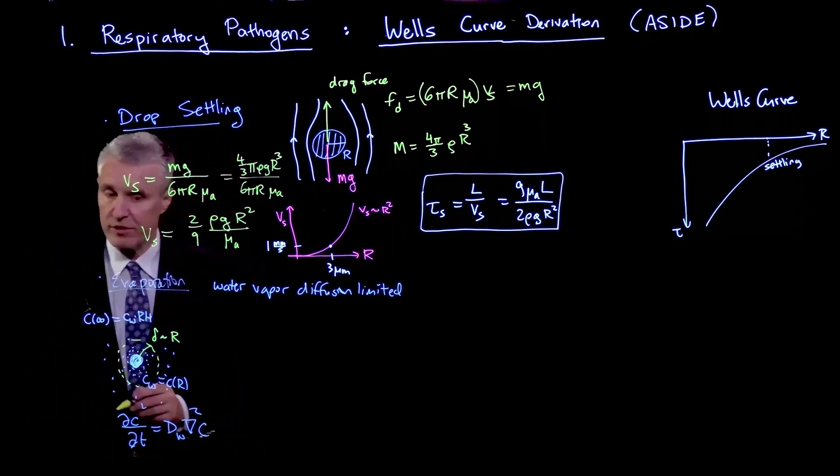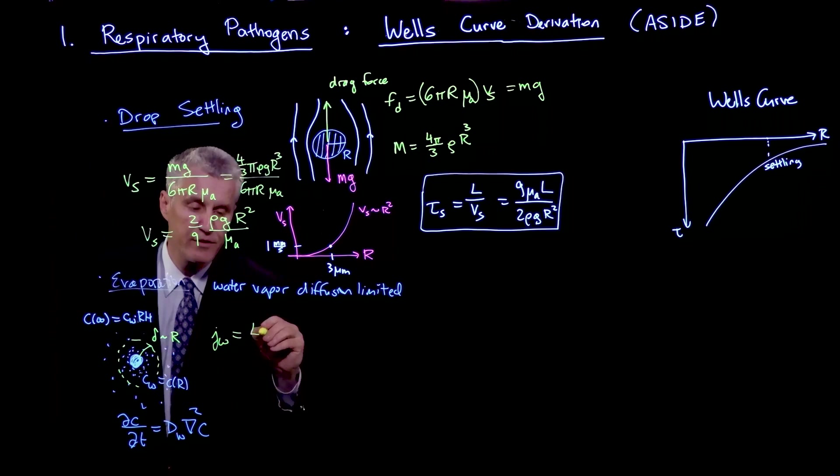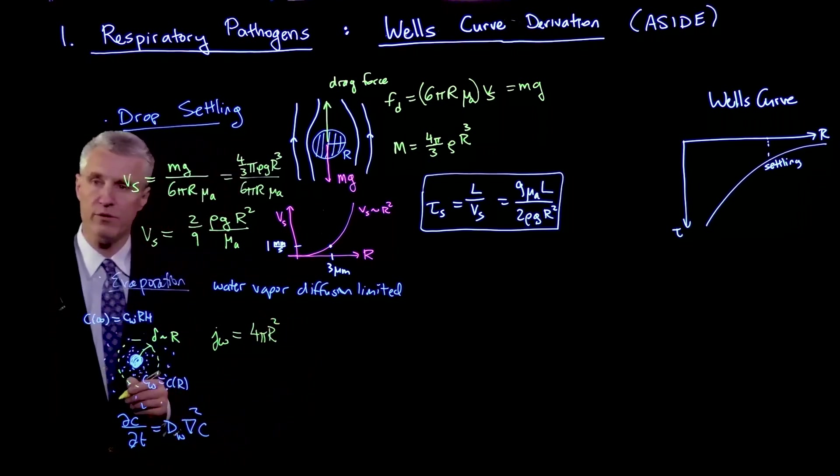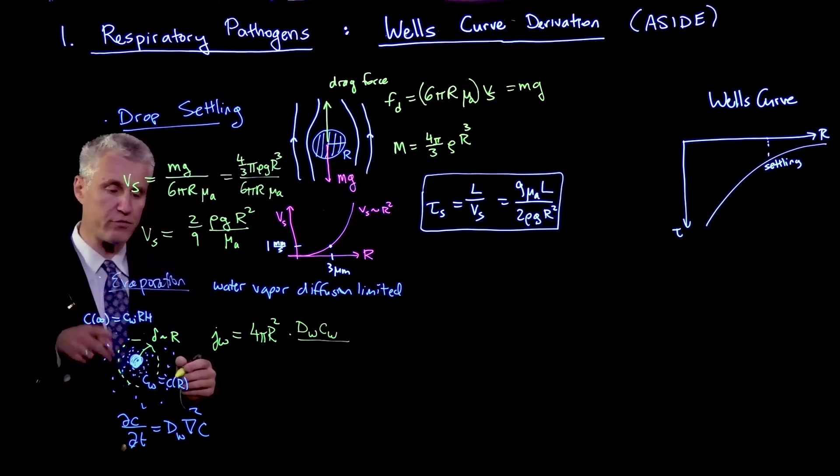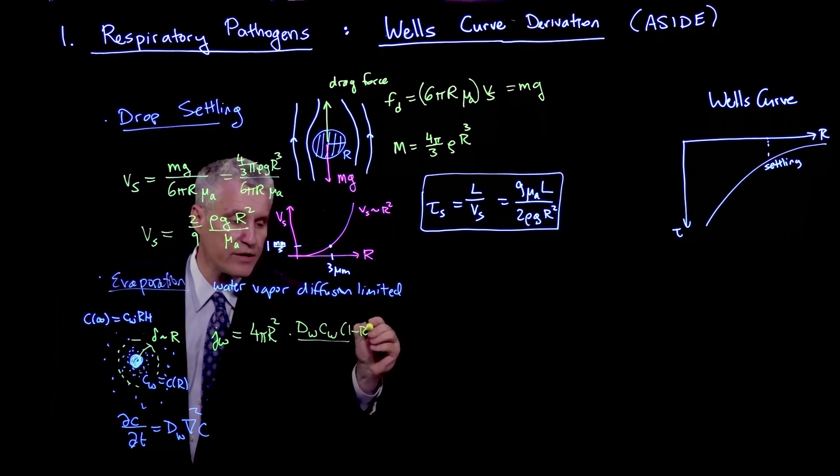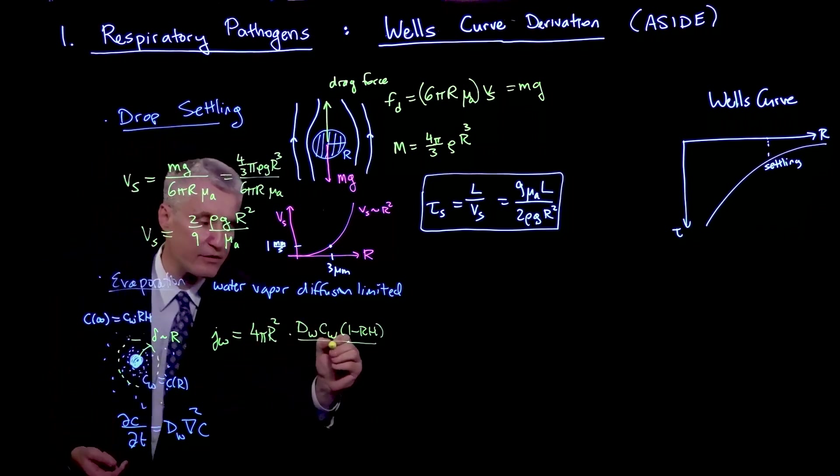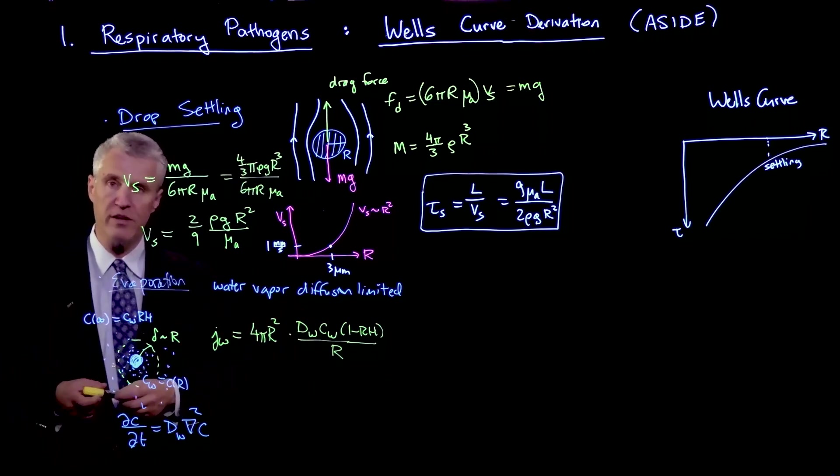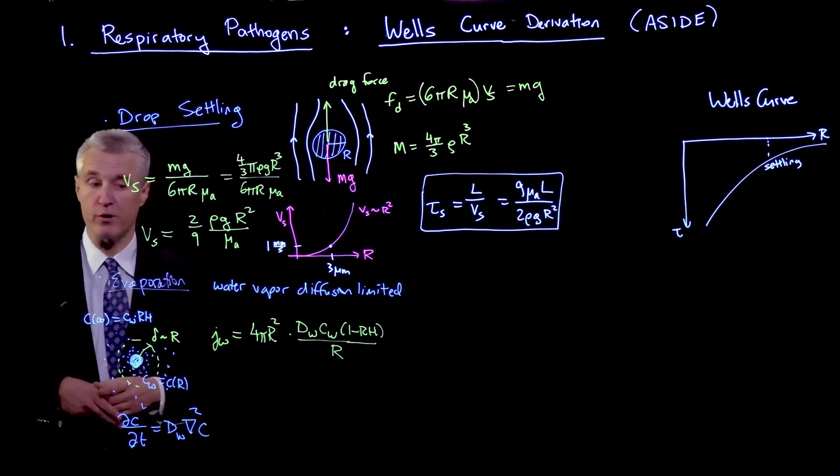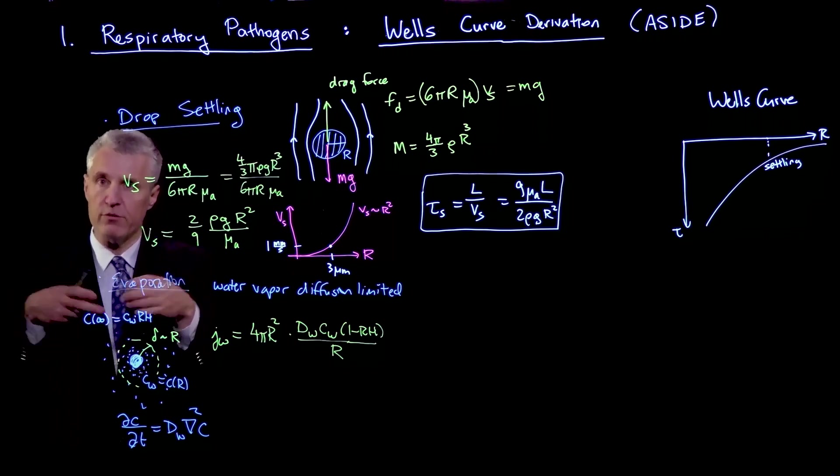The bottom line of this calculation, which I will not go through right now, is that the flux of water on the surface is the area of the surface at a given moment, where the size is r, times essentially Fick's law, where the driving force, the change in concentration from the surface to the bulk, is Cw times 1 minus relative humidity, the diffusivity of water, and then divided by δ, the diffusion layer thickness. With these coefficients here, it turns out to be exactly r. This is not a scaling result, but actually an exact result for pseudo-steady spherical diffusion of water vapor. Now we have the flux on the surface. It's uniform on the surface and assumed to be pseudo-steady.